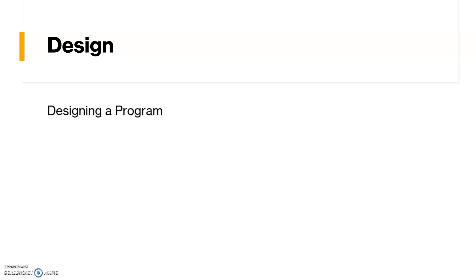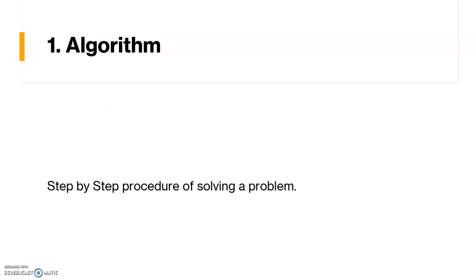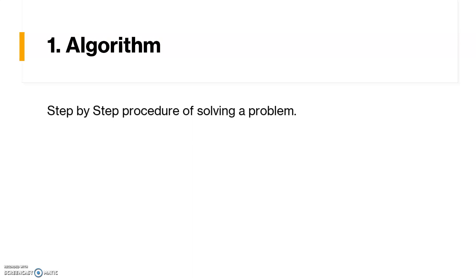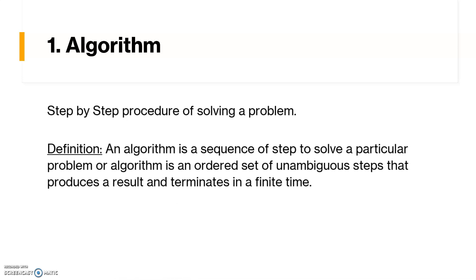In the design phase, once the problem is clearly defined and you have your input and output specifications, you can start designing a program. Before writing code in a programming language like C or Java, we need to write an algorithm and flowchart for the problem. An algorithm is a sequence of steps to solve a particular problem — an ordered set of unambiguous steps that will produce a result and terminate in a finite time.